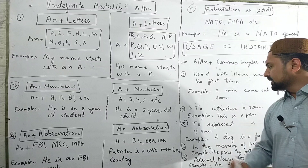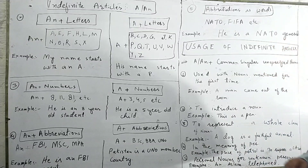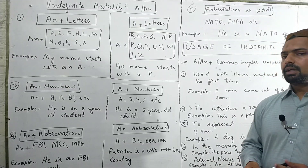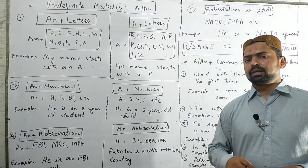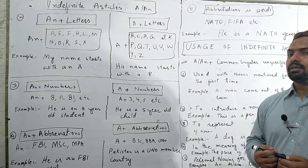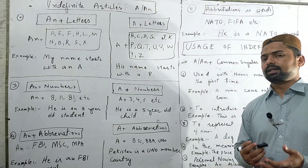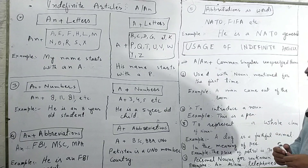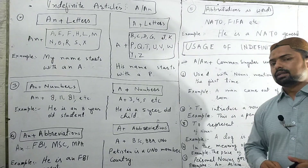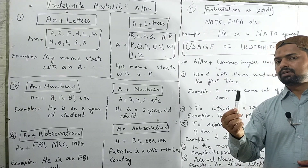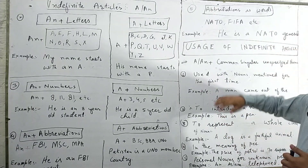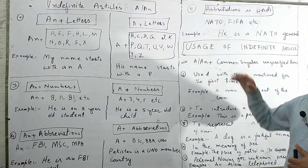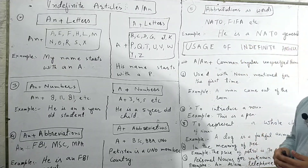Second use: to introduce a noun in a sentence. If a noun is being introduced for the first time, the indefinite article is used. For example: this is A pen, this is A board, this is chalk.